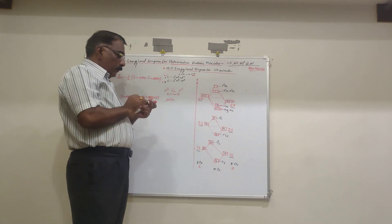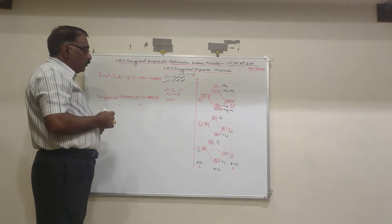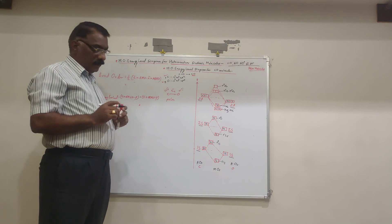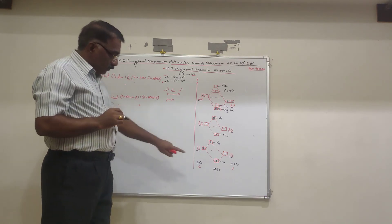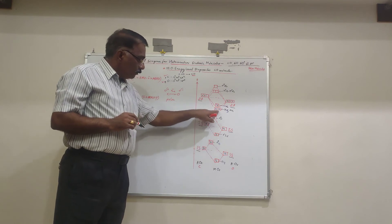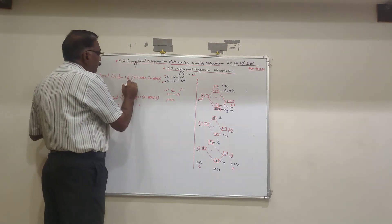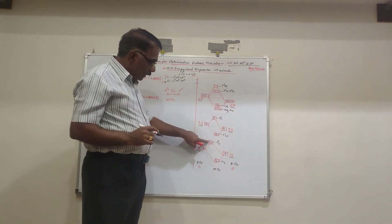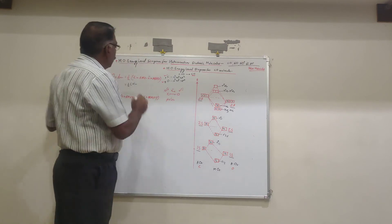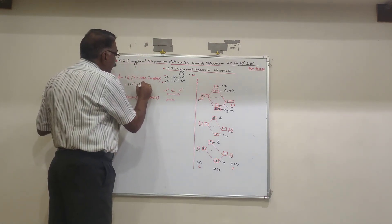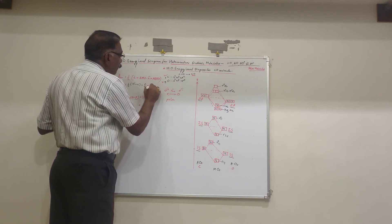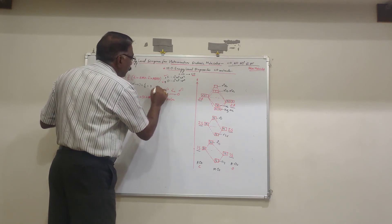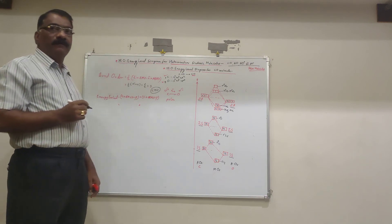Now we calculate the bond order. Bond order = ½ × (electrons in BMO − electrons in ABMO). The BMOs contain 10 electrons (all five BMOs are filled: σ1s, σ2s, σ2px, π2py, π2pz). The ABMOs contain 4 electrons (σ*1s has 2 and σ*2s has 2; π* orbitals are empty). So bond order = ½ × (10 − 4) = ½ × 6 = 3. There is a triple bond between carbon and oxygen.